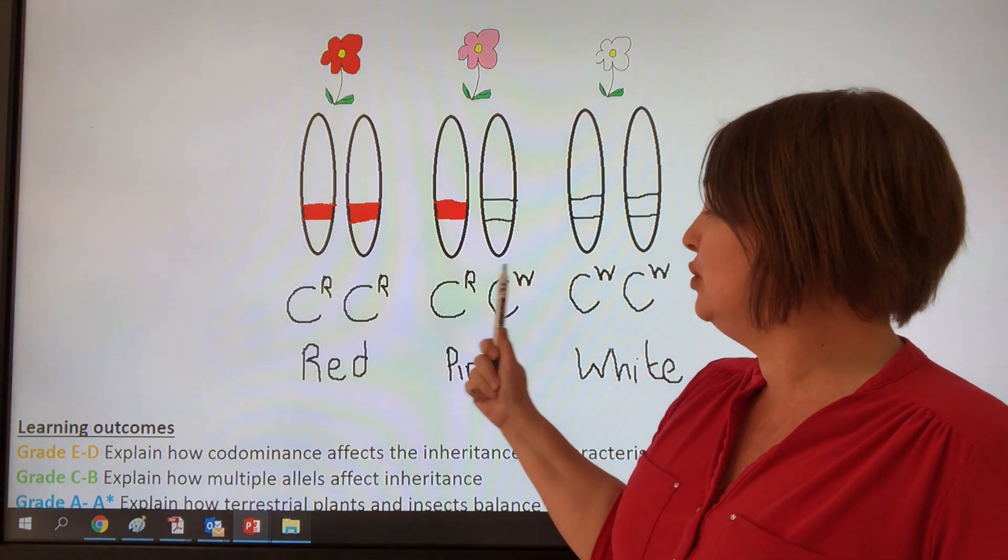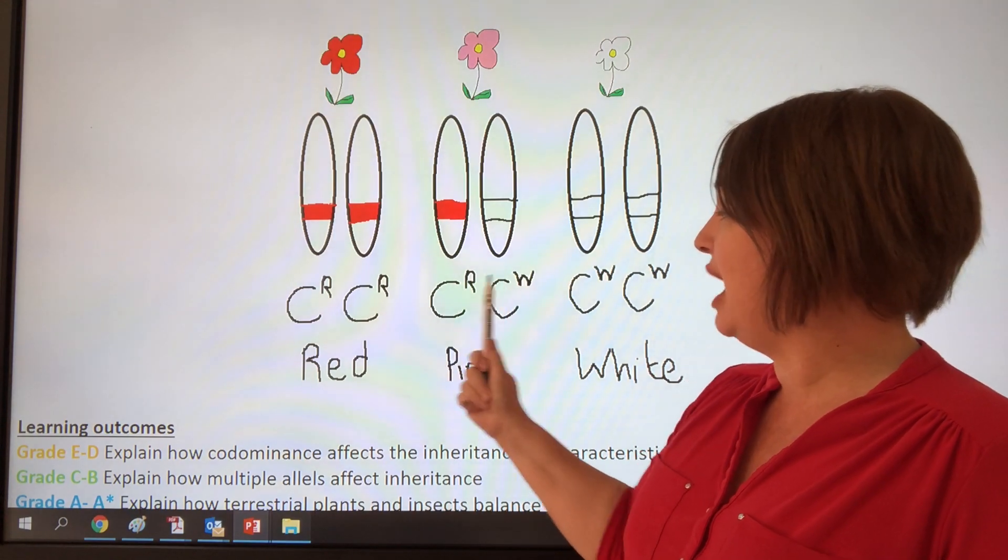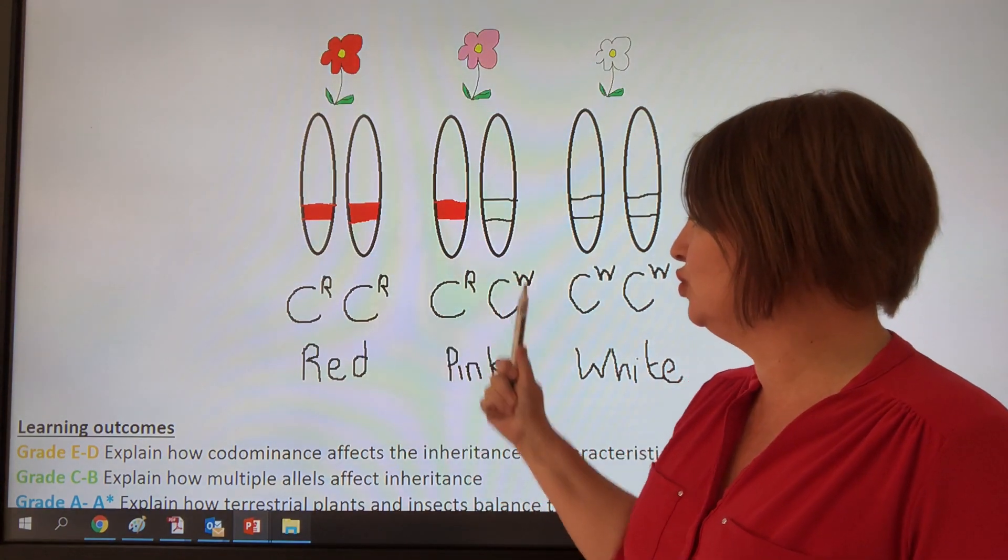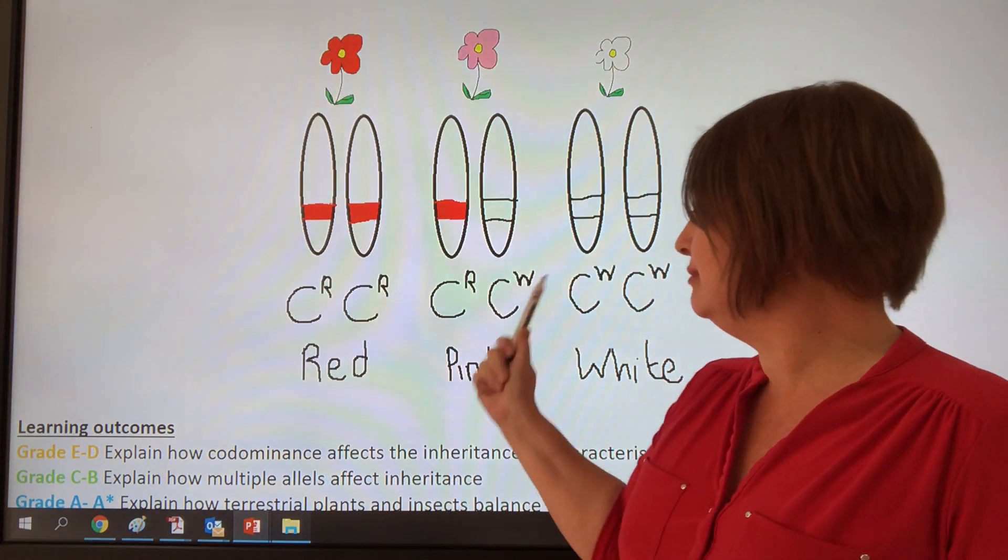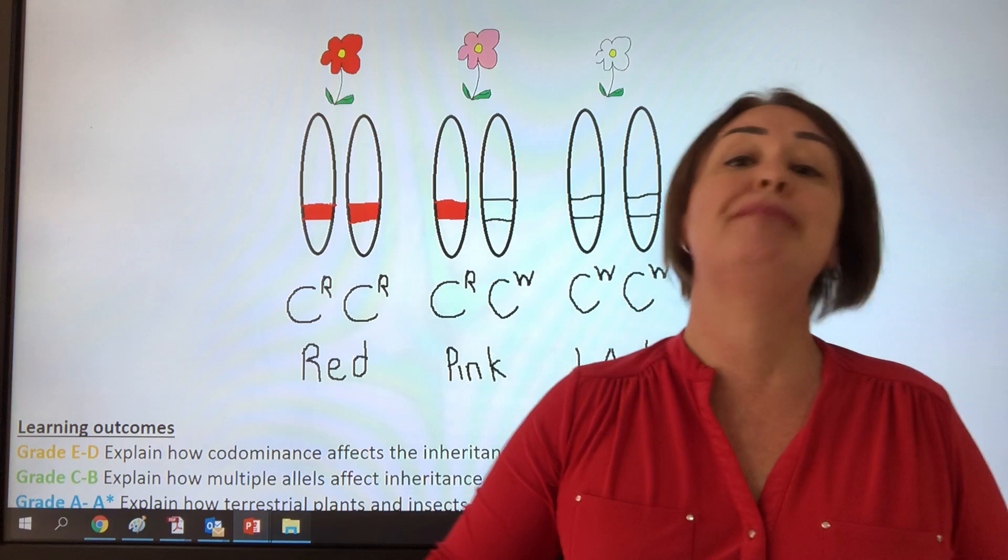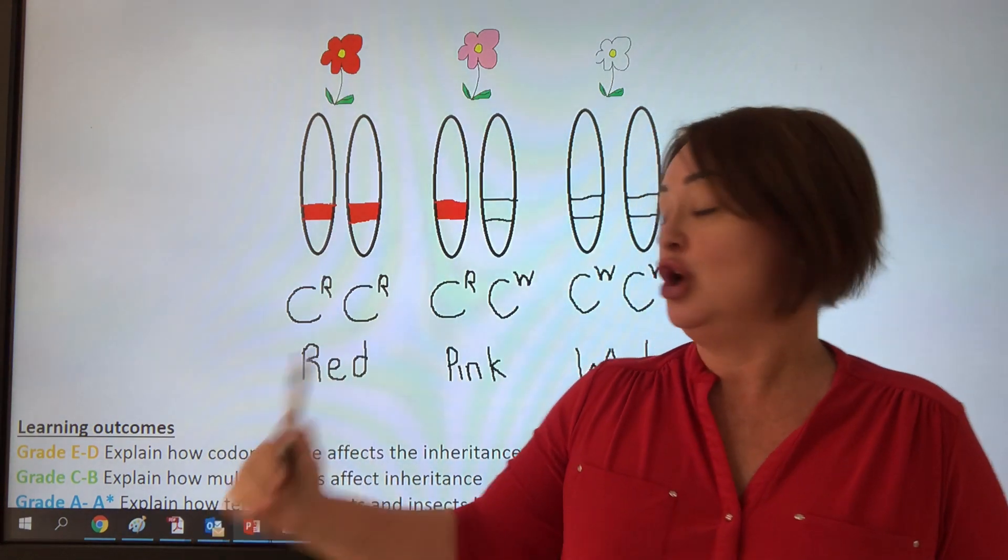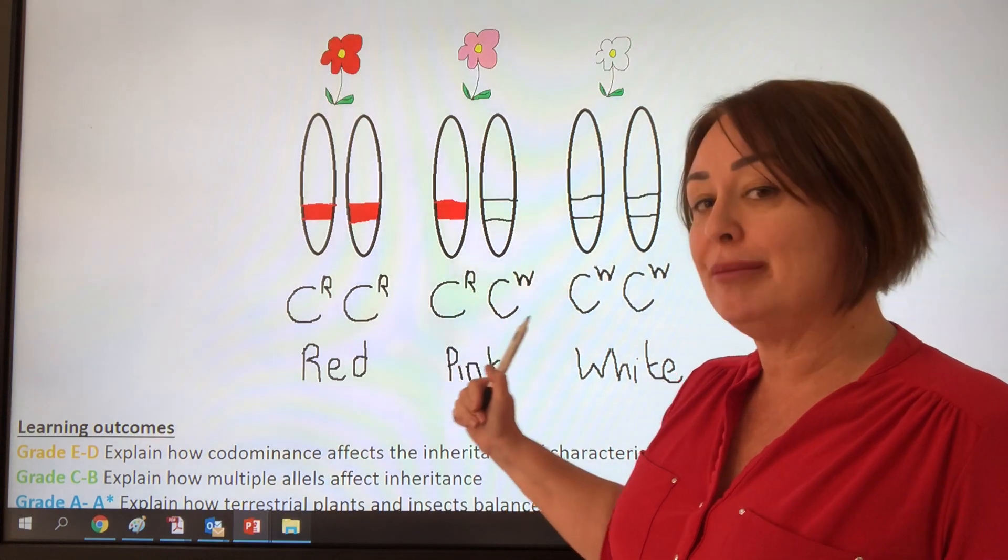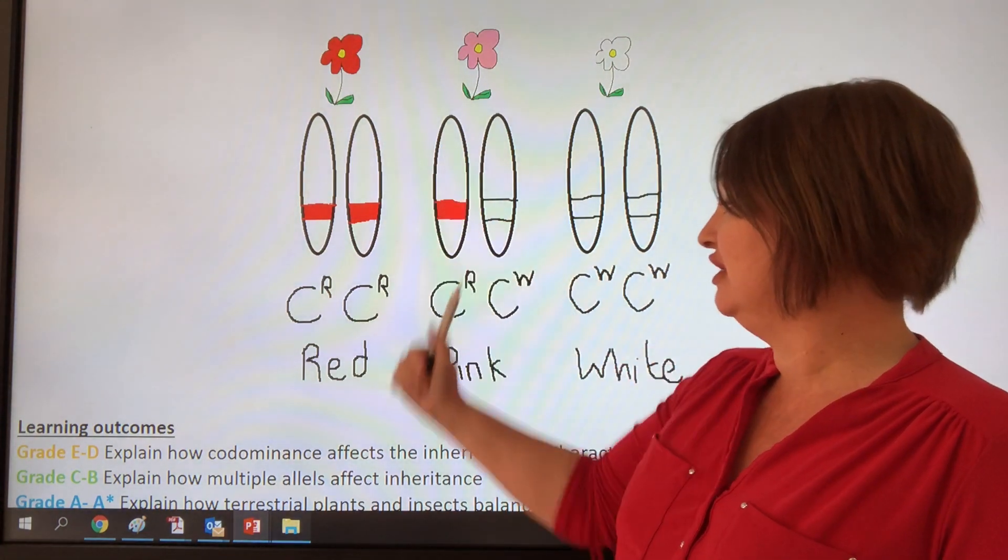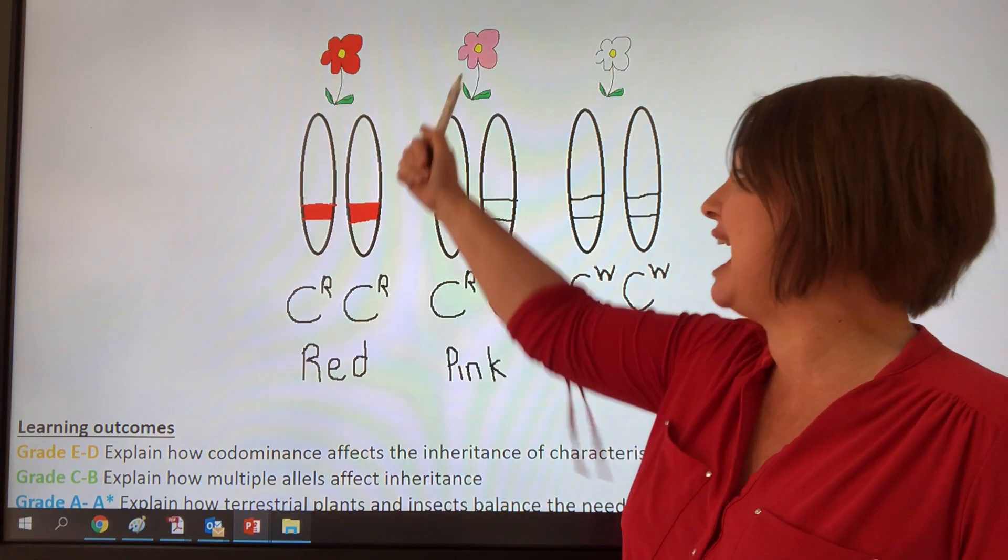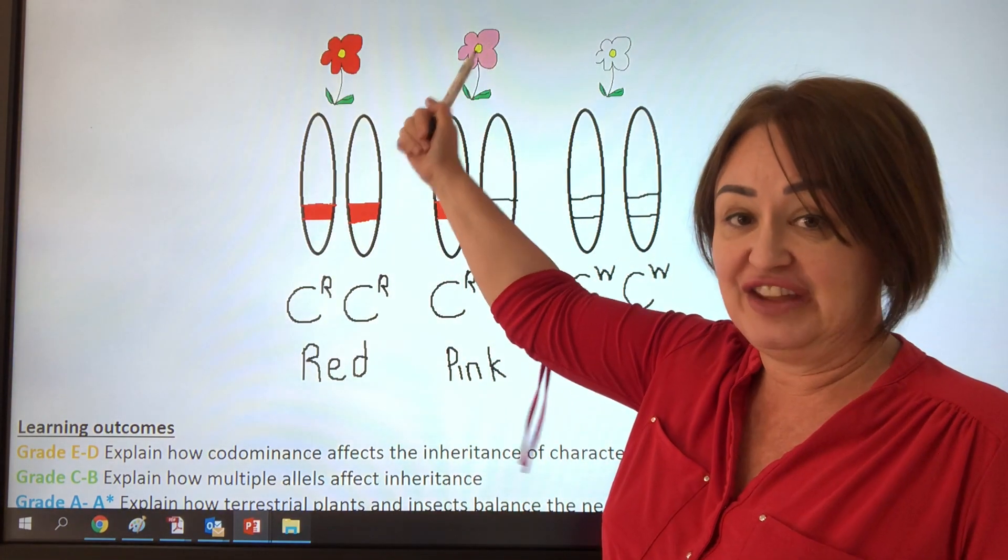In other words, both of these are expressed because it's pink. We can't say that the red is dominant to the white, because that would mean that the white was recessive. And remember, recessive is when it's masked by the dominant. But this allele is not masked by this other allele here, so it's not recessive, it's co-dominant. It actually shows in the phenotype.